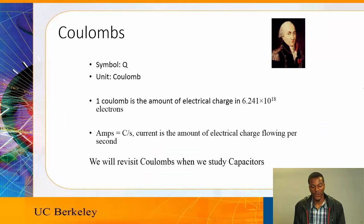The symbol for this is Q. In order to produce one coulomb of electric charge, we would need 6.241 times 10 to the 18th electrons. As we already stated, current is the amount of electrical charge flowing per second. We will revisit coulombs when we study capacitors.